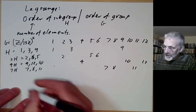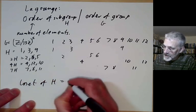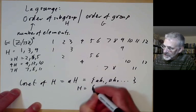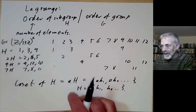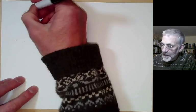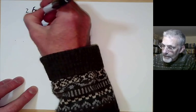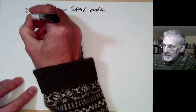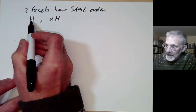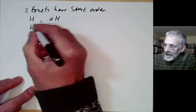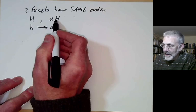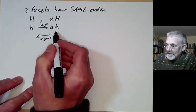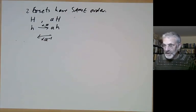We notice that any two cosets have the same order. That's because if you've got two cosets, say H and aH, we can map any element h to a times h, giving a map from H to aH, and we can map it back by multiplying by the inverse of a. These two maps are bijections and give a one-to-one correspondence between the two cosets.